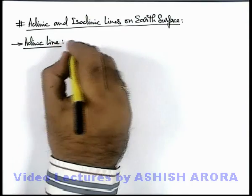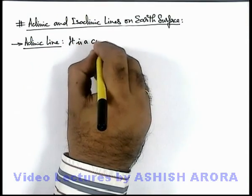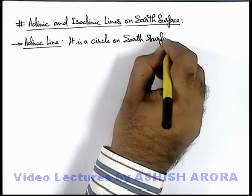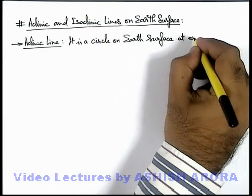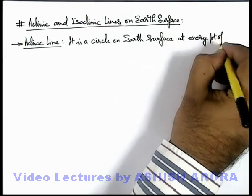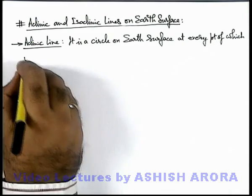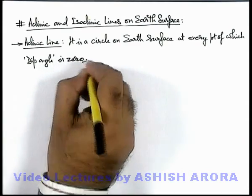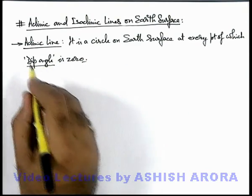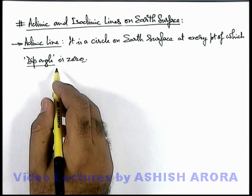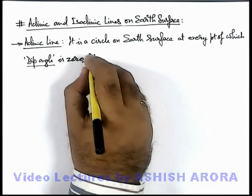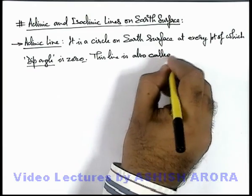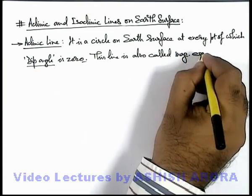Aclinic line: it is a circle on earth's surface at every point of which the dip angle is zero. We already studied that the dip angle is the angle made by earth's magnetic field vector with the horizontal at any point on earth's surface. This aclinic line is also called the magnetic equator of earth.